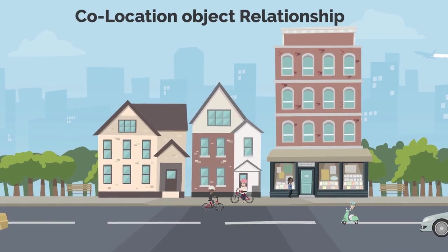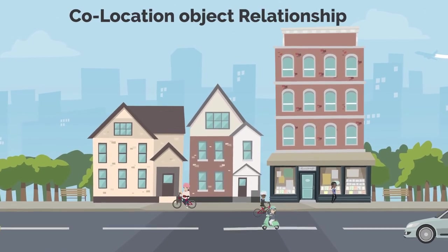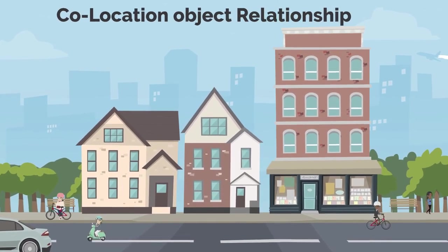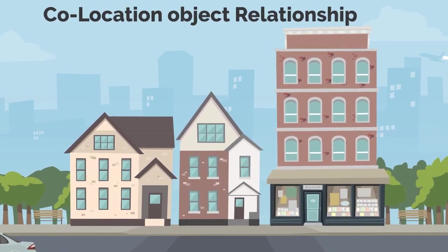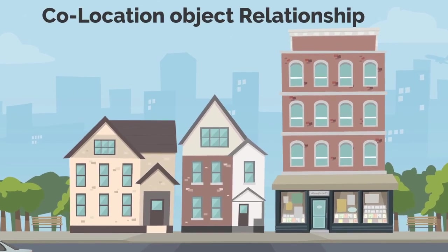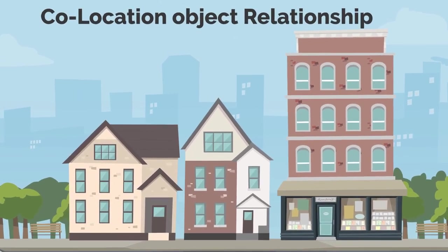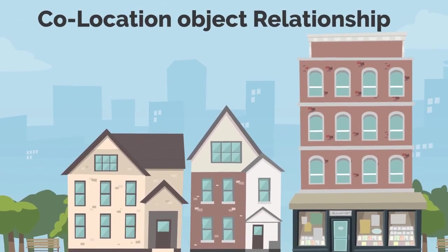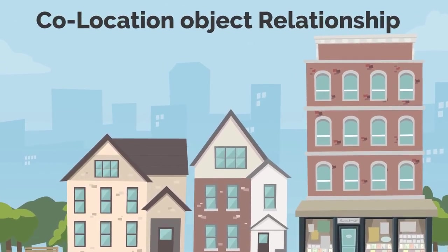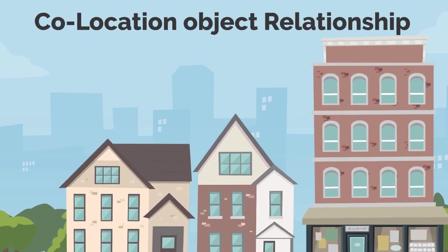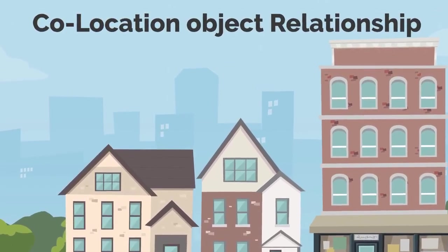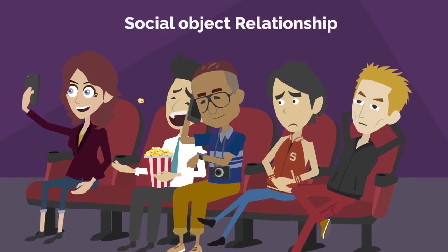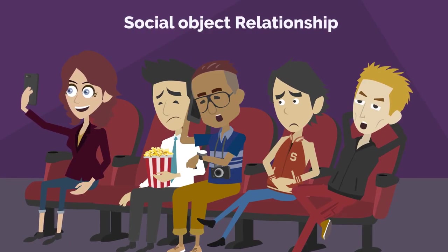Collocation-object relationship is the relationships among objects used always in the same place. For example, sensors, actuators, augmented objects, and smart devices used in the same environment such as a smart home or a smart city.